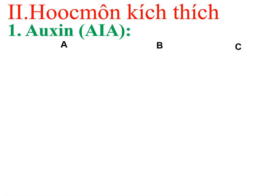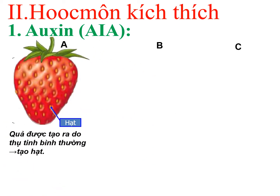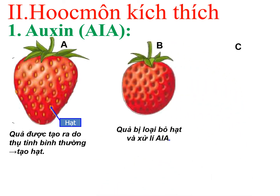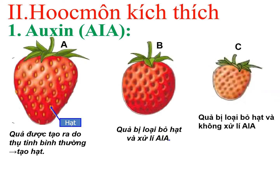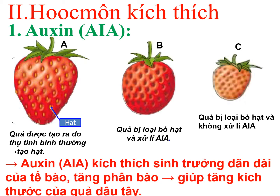Hốc môn thứ nhất là auxin, viết tắt là IAA. Hình A là quả được tạo ra do quá trình thụ tinh bình thường, nên quả dâu tây có hạt - trong hạt sẽ sản sinh ra auxin. Ở hình B, người ta loại bỏ hạt nhưng có xử lý auxin thì kích thước của quả vẫn bình thường. Ở hình C, người ta loại bỏ hạt và không xử lý auxin thì kích thước của quả rất bé. Qua đây, auxin có vai trò kích thích sinh trưởng giãn dài của tế bào và kích thích sự phân chia tế bào, từ đó giúp tăng kích thước của quả.